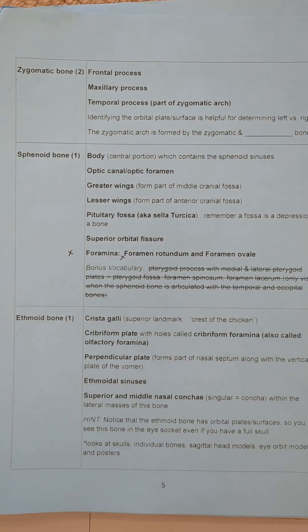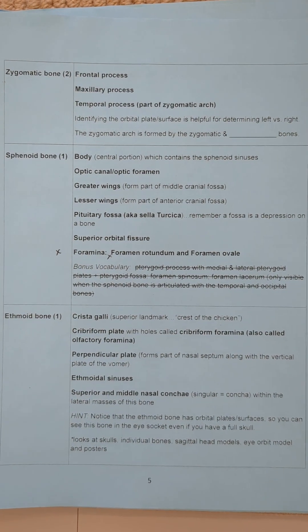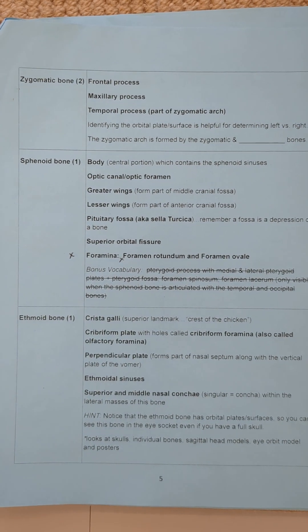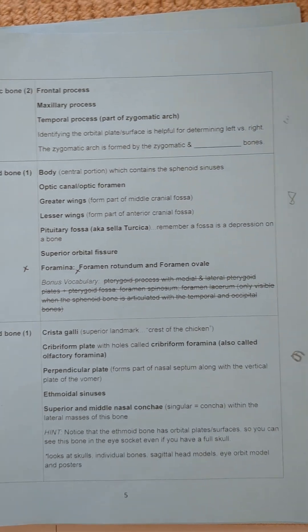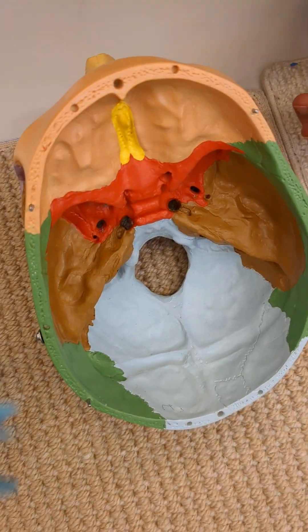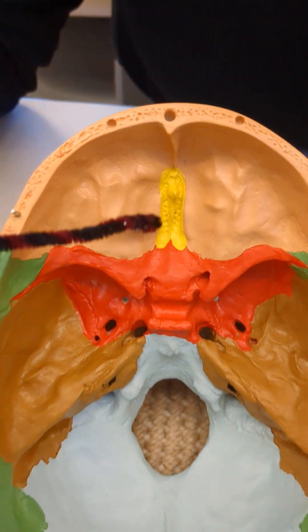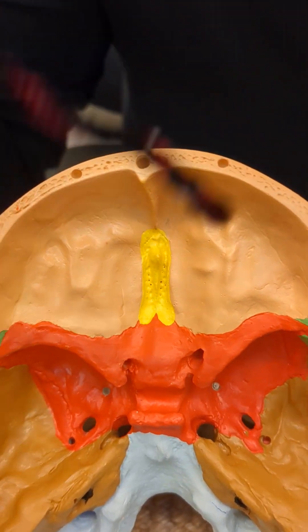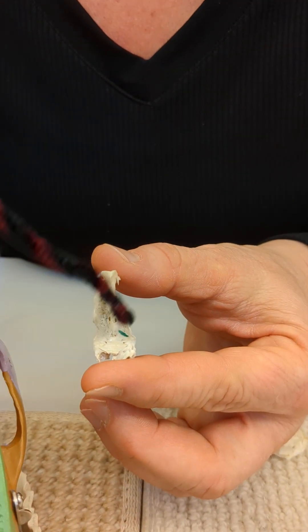This video is going to be about the ethmoid bone. If you look at your blue bone packet, page 5, you'll see the ethmoid bone. We're going to look at it over here on a plastic skull. Here we have the ethmoid bone in the plastic skull, and here it is in the human.